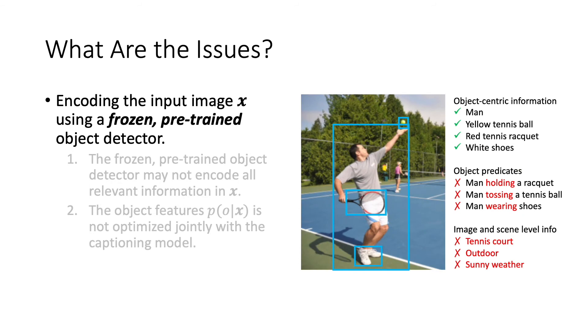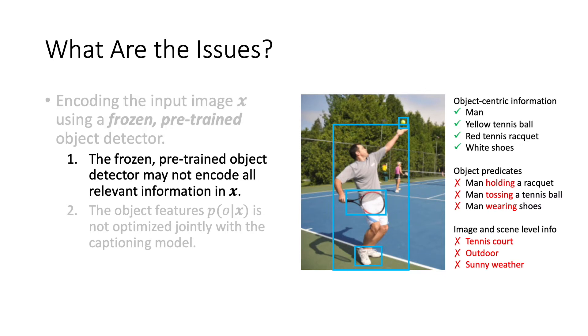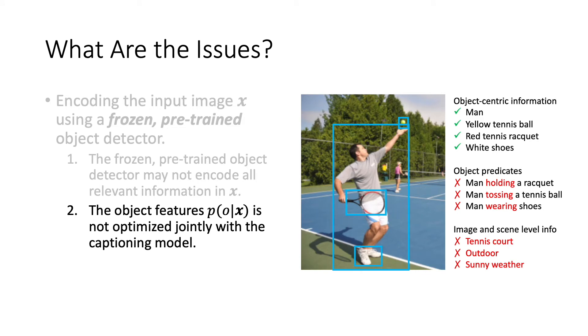Current image captioning methods typically encode the input image with a frozen pre-trained detector. On the right figure, even though the object detector may be good at encoding object-centric information, such as the man and the racket, it may fail to encode other information, such as the object relationship, for example, man holding a racket, or image and scene-level information, such as tennis court and the outdoor scene. And obviously, since the detector is not jointly optimized with the captioning model, the object features may not be optimal for the target image captioning task.